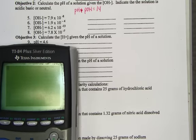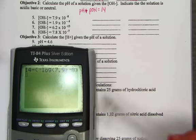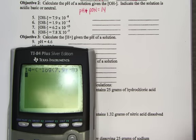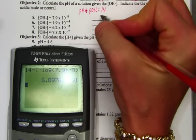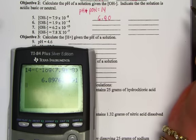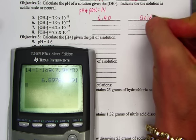So the key sequence I use for objective 2, and again there's a lot of correct key sequences, this is just the fewest key strokes. I hit 14 minus, and then I go parenthesis, negative log of 7.9 E negative 8. And what I've done with that key sequence is taken 14 minus the pOH, and when I hit enter, I get the pH directly. Now I'll round to get two decimal places. 6.90 gives us the pH, and that is slightly acidic, just below 7.